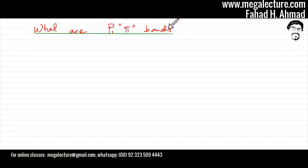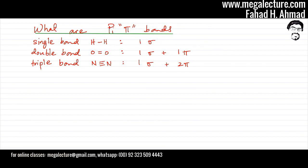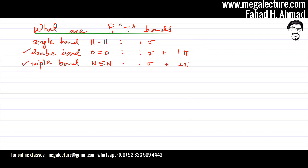Now let's discuss pi bonds. We know that a single bond has one sigma bond. When atoms form double bonds — for example, an oxygen molecule — the first bond is a sigma bond and the second bond is a pi bond. If there's a triple bond, such as N≡N, the first bond is sigma and the remaining two bonds are pi bonds. Pi bonds occur in double and triple bonds; there are no pi bonds in single bonds.